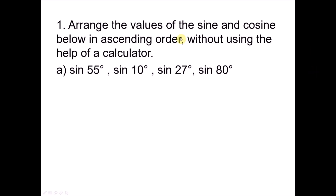Question number 1: Arrange the values of sine and cosine below in ascending order without using the help of a calculator. We have sine 55 degrees, sine 10 degrees, sine 27 degrees, and sine 80 degrees. Of course you can always key these into your calculator and compare all the sine values, but we also need to understand how to solve this without a calculator.